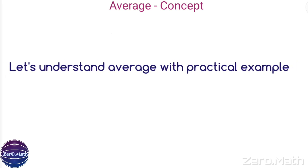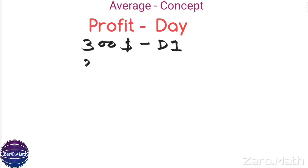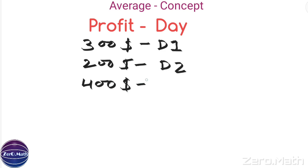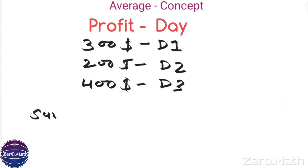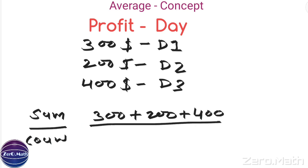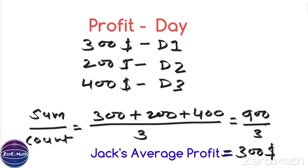Let us take a practical example. Jack earns a profit of 300 USD on day 1, 200 USD on day 2, and 400 USD on day 3. How much average profit does he earn each day? We take the sum of his profit: 300 + 200 + 400, divided by the count of days, which is 3. The sum is 900, divided by 3 equals 300. So Jack earns an average profit of 300 each day.